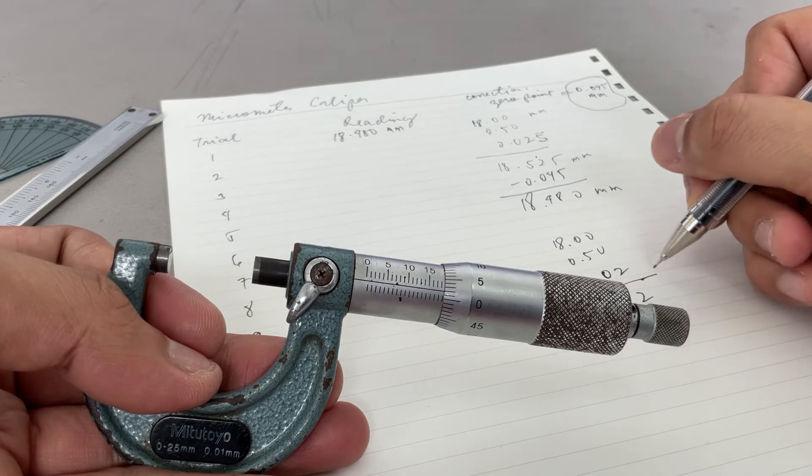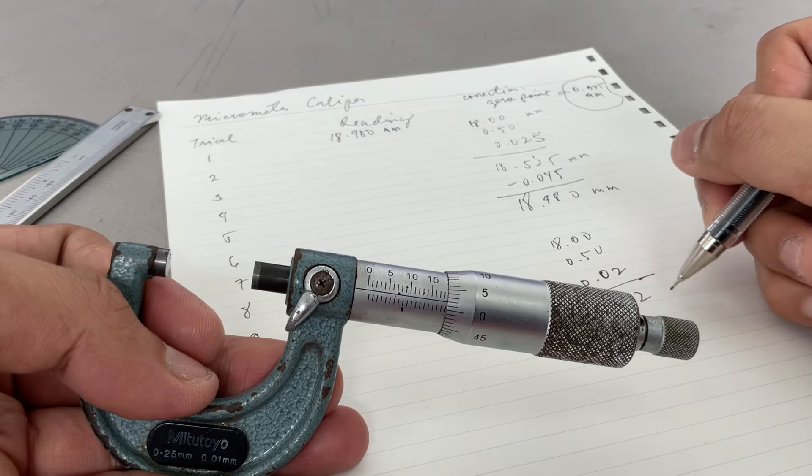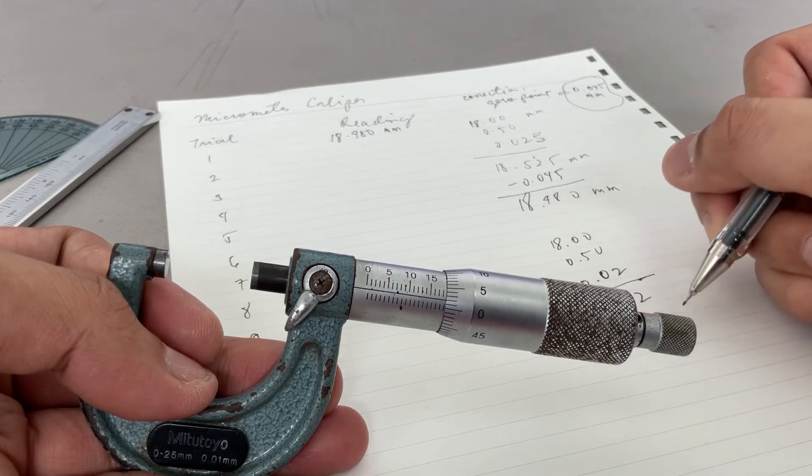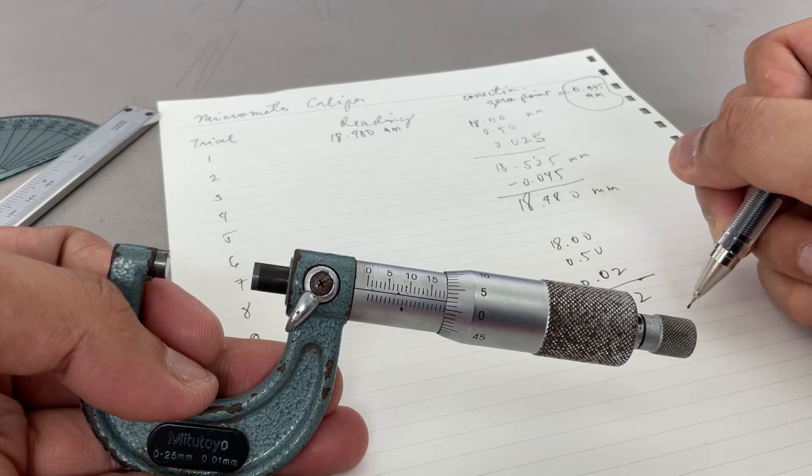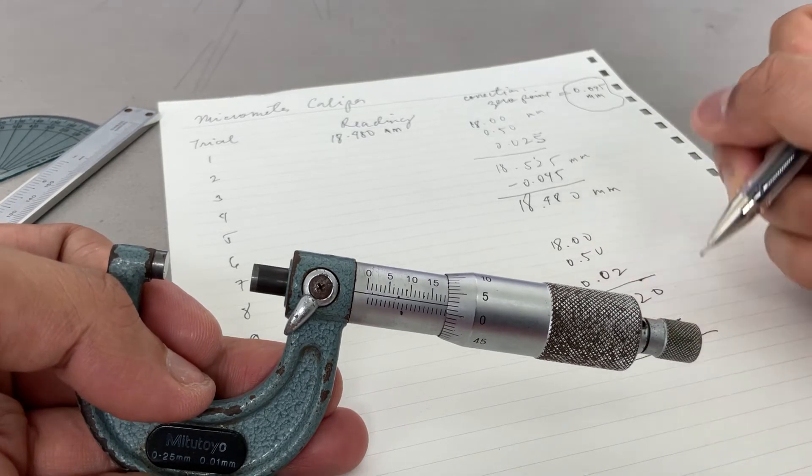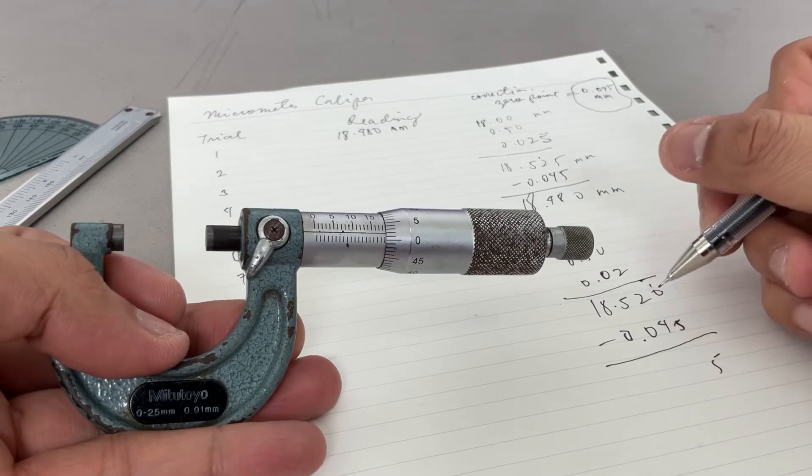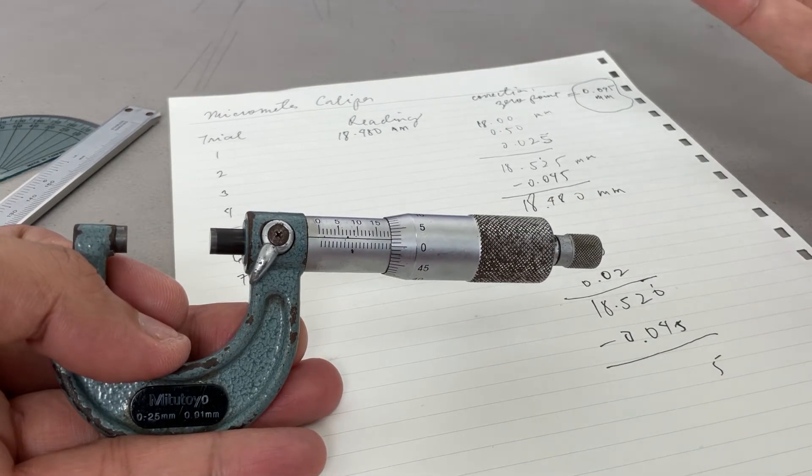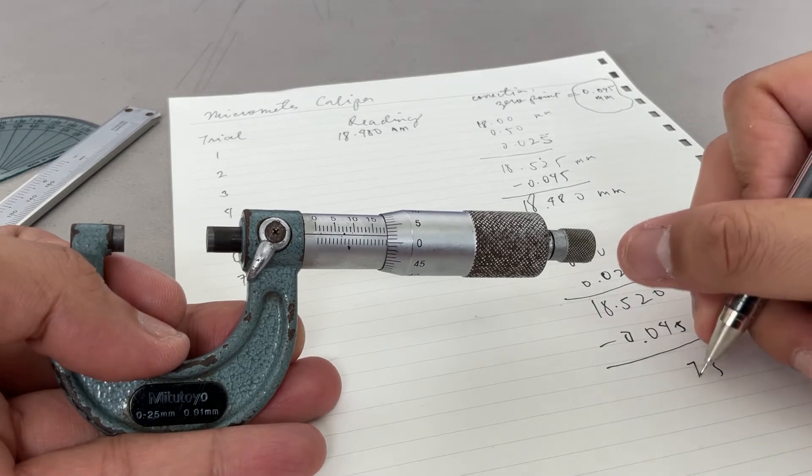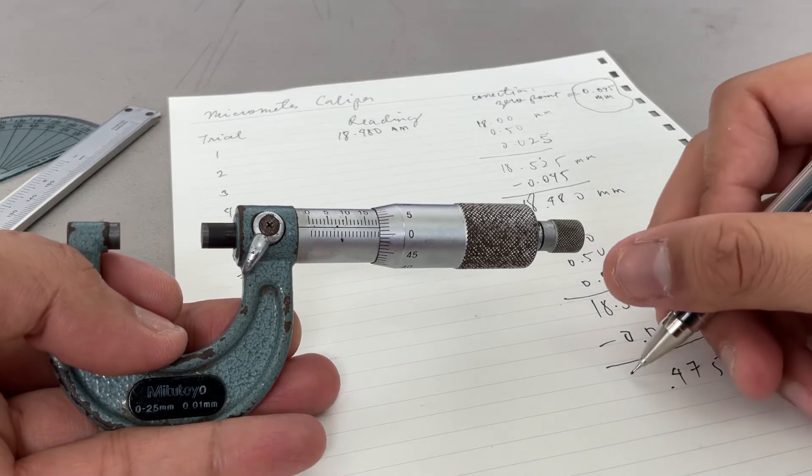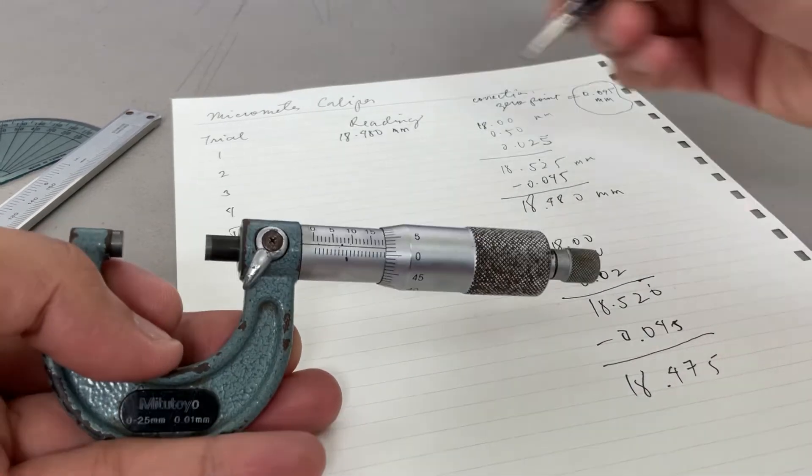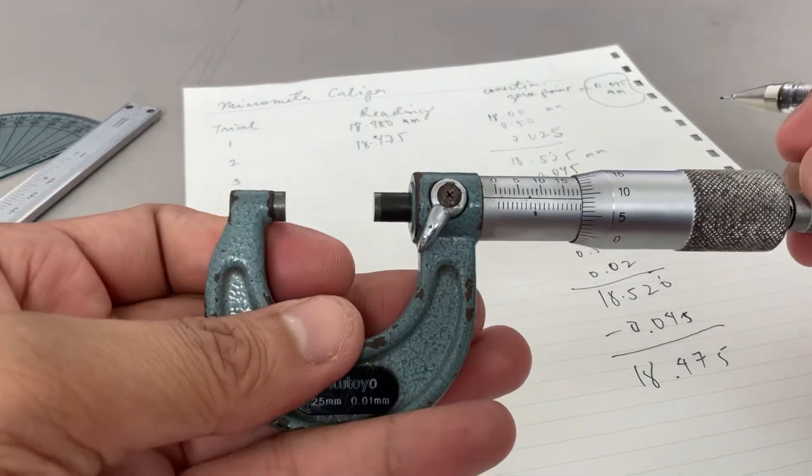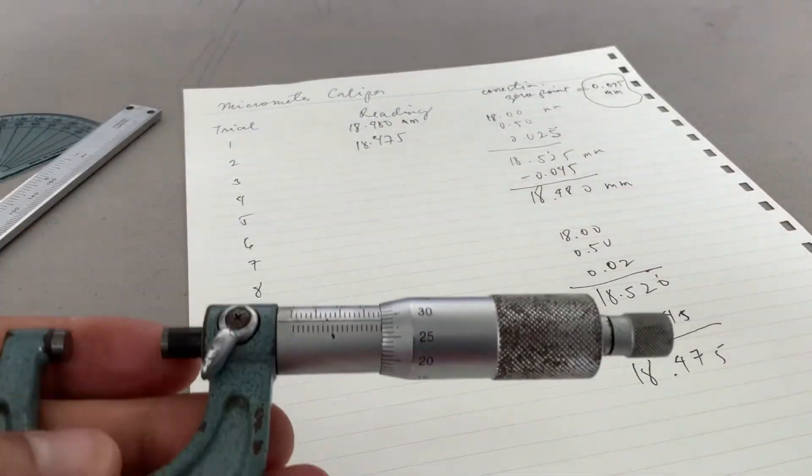And then minus 0.045. So let's have another trial.